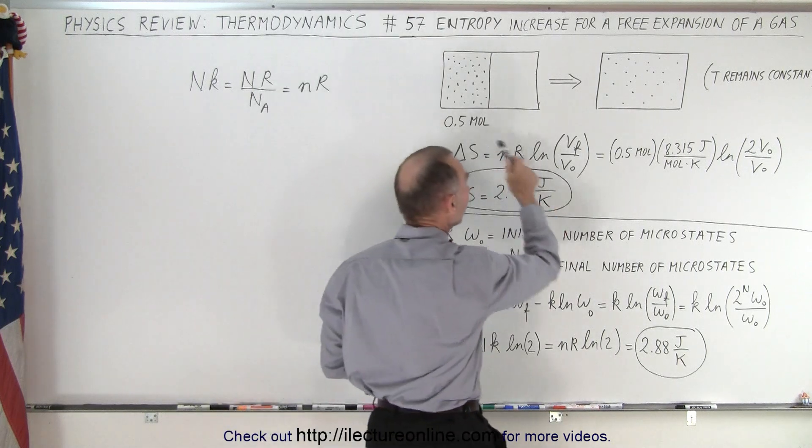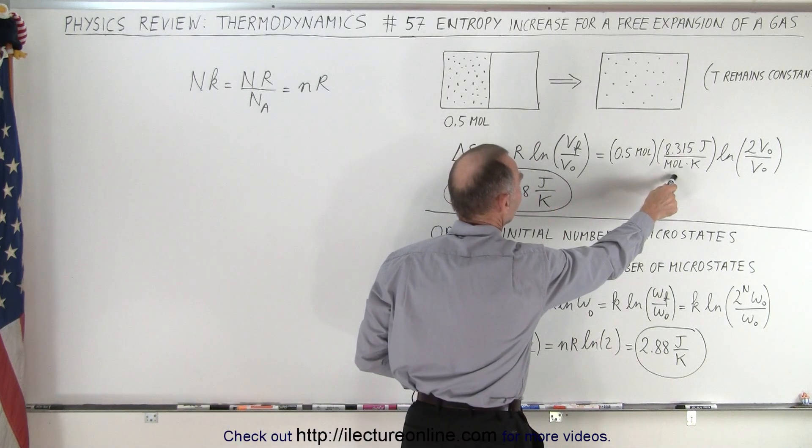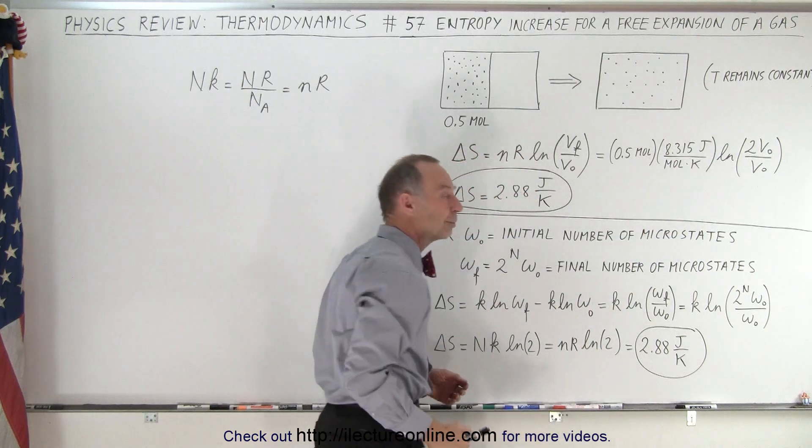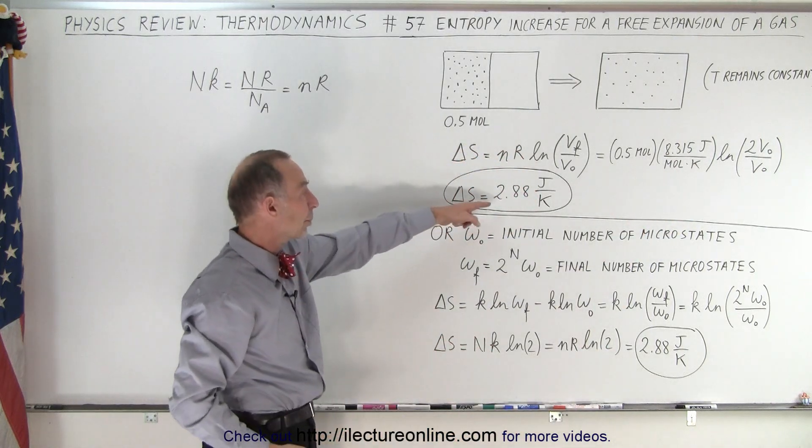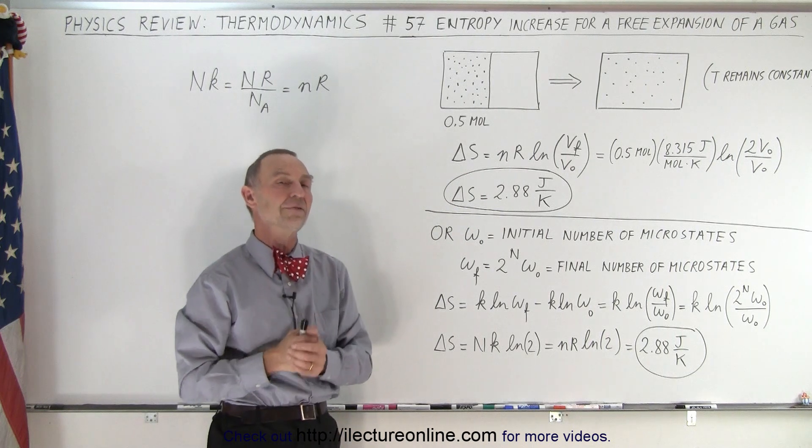So we take a half a mole, we multiply times the gas constant and times the natural log of twice the volume over the initial volume and we end up with an entropy change of 2.88 joules per Kelvin.